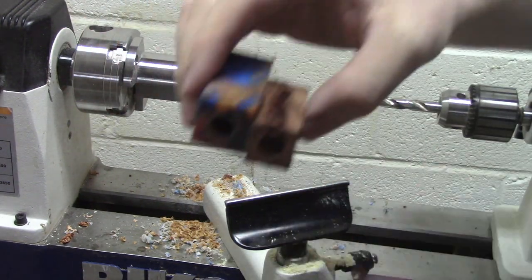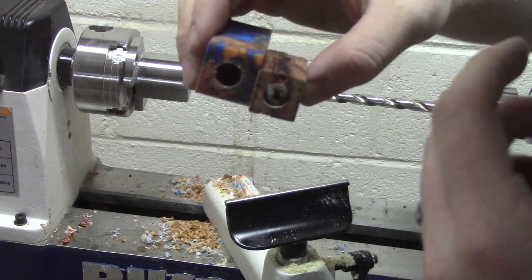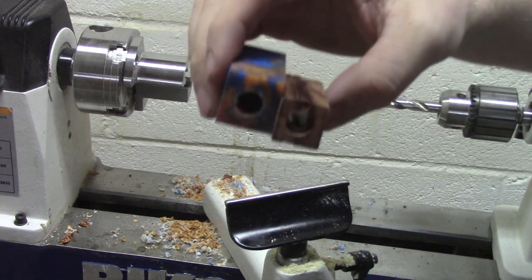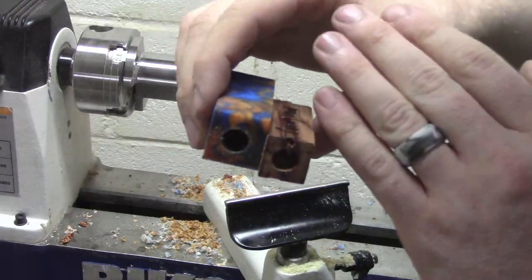And there we are, there's our entry and exit holes. So there's our two blanks together. Now when you finish drilling these blanks, they could be a little warm. So what I do is before I go to glue them up, I let them sit for a little bit just to cool down. I'm going to let these cool down for a little bit and then we'll be back to do the glue up.